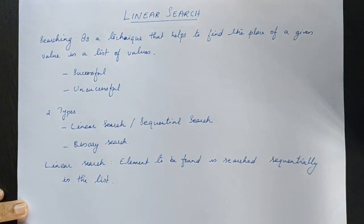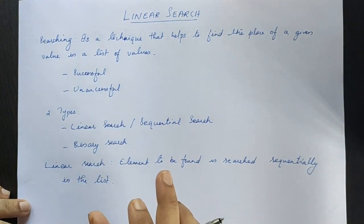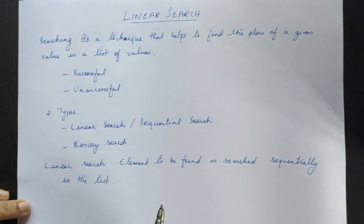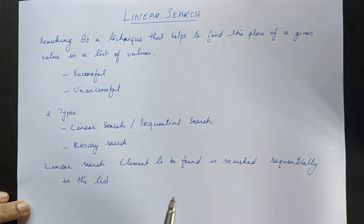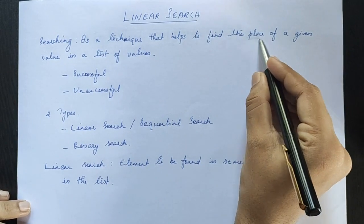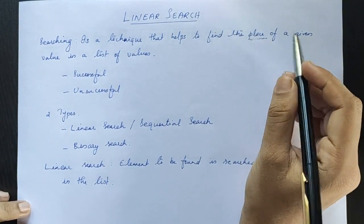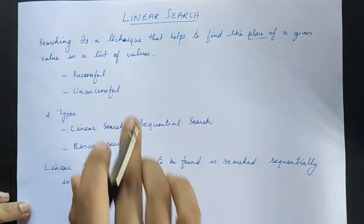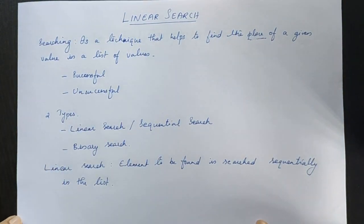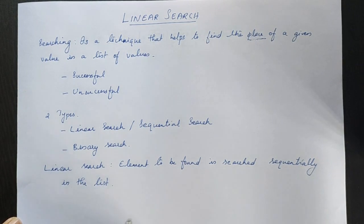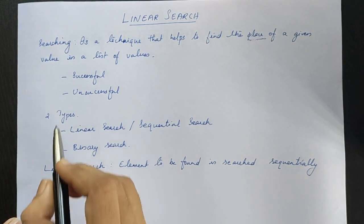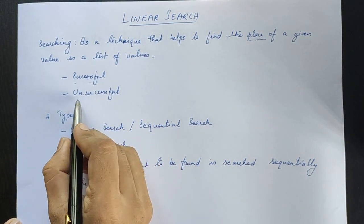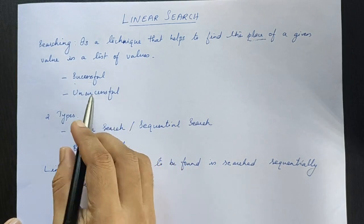This is a list of values. This is an array. The process of searching will have two cases. Suppose that there are two cases on the list of results: successful search and unsuccessful search.